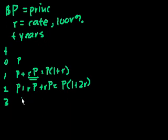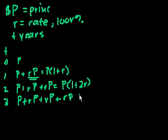And then in year 3, we'd owe what we owed in year 2, so P plus rP plus rP, and then we'd just pay another rP of our original principal. Plus rP. And so that equals P times 1 plus 3r.